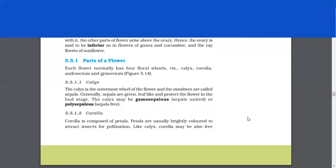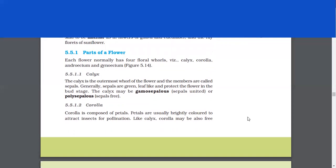Parts of a flower. Each flower normally has four floral whorls, which is calyx, corolla, androecium and gynoecium. Calyx. The calyx is the outermost whorl of the flower and the members are called sepals. Generally, sepals are green, leaf-like and protect the flower in the bud stage. The calyx may be gamosepalous, that is sepals united, or polysepalous, that means free sepals.